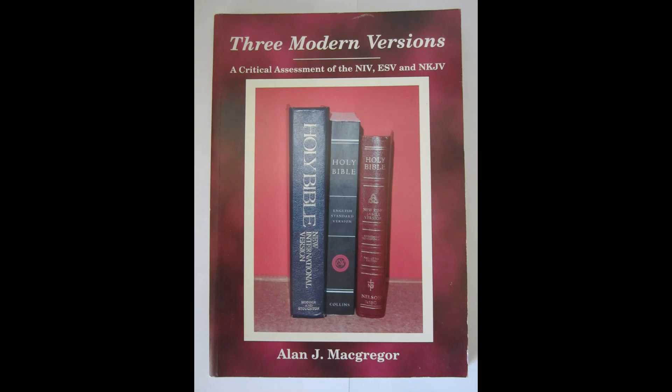Chapter 7: the NKJV, or the New King James Version. Here is a summary of McGregor's critique. Number one: the NKJV departs from the Textus Receptus by alteration, addition, or omission of words in about 1,200 places. Number two: it makes use of extensive textual footnotes. "Surely, constantly referring the reader's attention to these footnotes is bound to put doubts into their minds as to the preservation and authenticity of the Word of God," end quote, page 62.